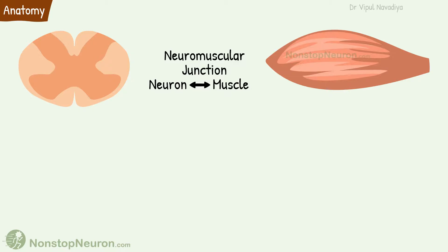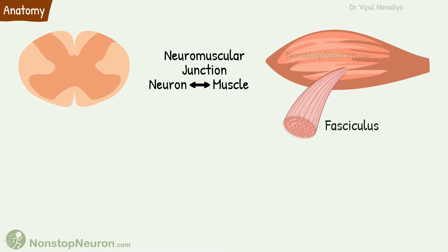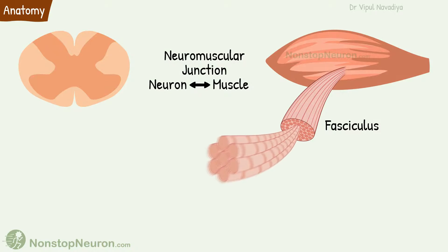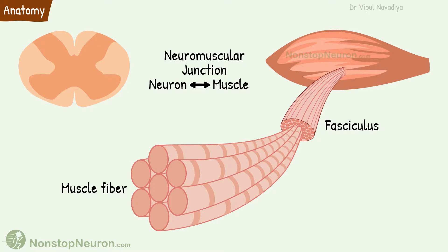The neuromuscular junction, as per the name, is a junction between a neuron and muscle. This is skeletal muscle. It is made up of bundles of fascicles which in turn are made up of muscle fibers.